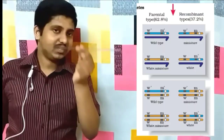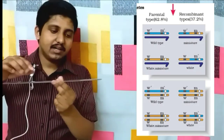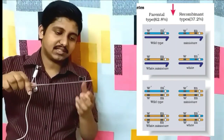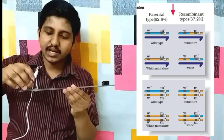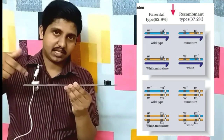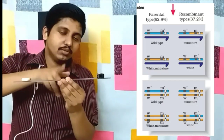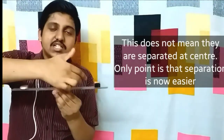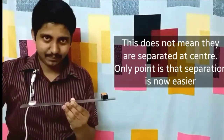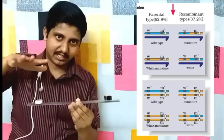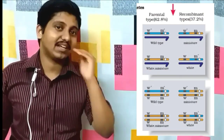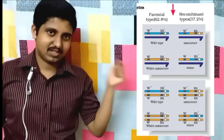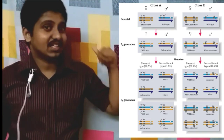In this second cross, suppose eye color is located at position 2 cm and wing size is located at 28 cm on the 30 cm chromosome scale. It is much easier to break between these widely separated positions, so crossing over separates these genes more easily. Because these genes are not closely linked, recombination frequency increased to 37.2% compared to just 1.3% in the previous cross.